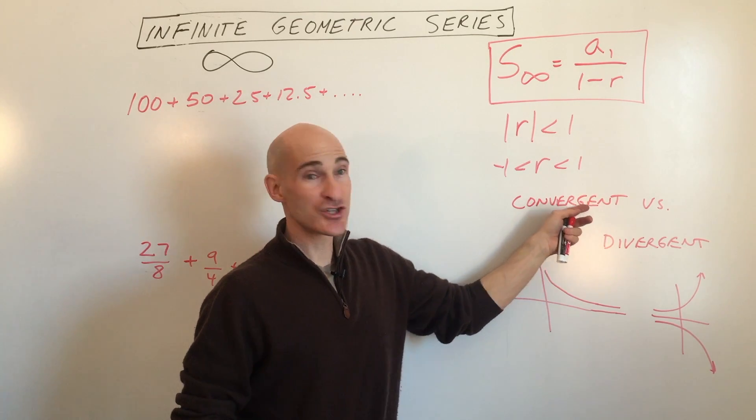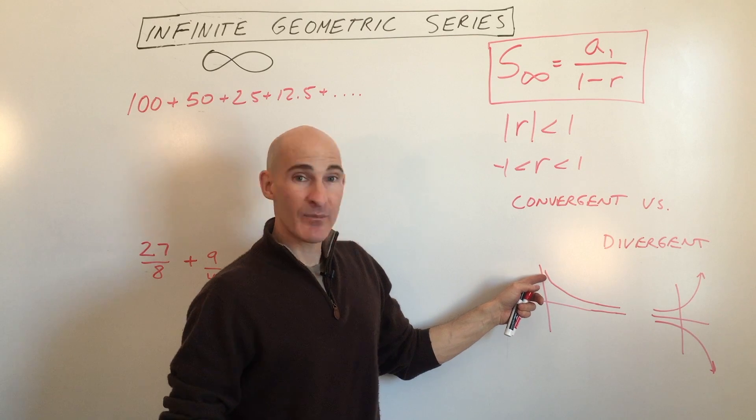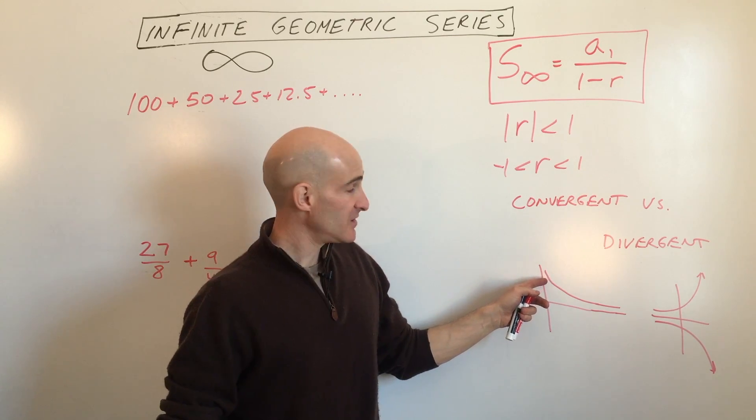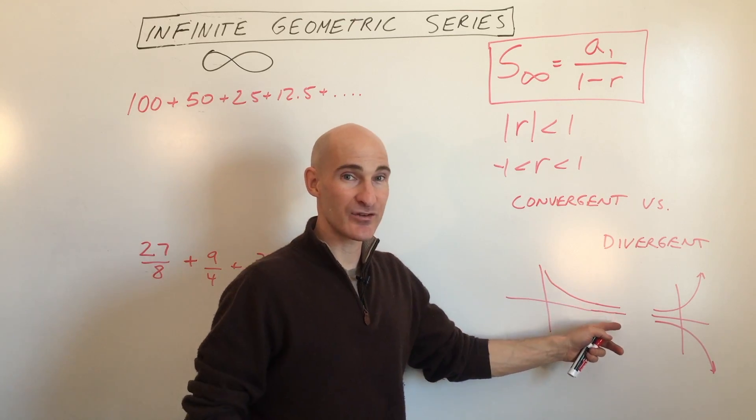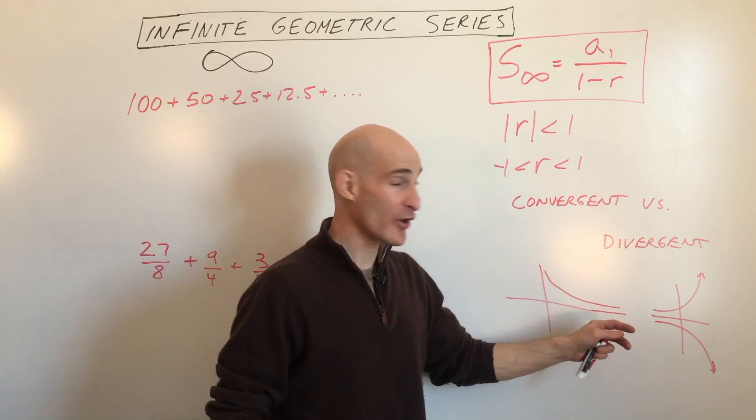What we want to do is we want it to be convergent. Say, for example, you're multiplying by a third, like 90 times a third is 30. And then 30 times a third is 10, and then 10 thirds and 10 ninths, and it's getting smaller and smaller, approaching zero.